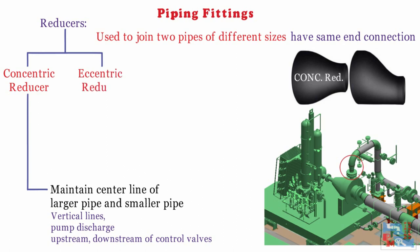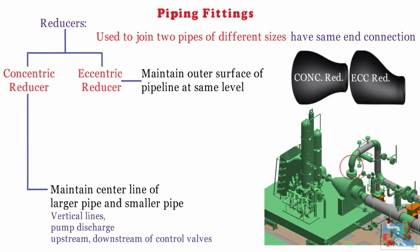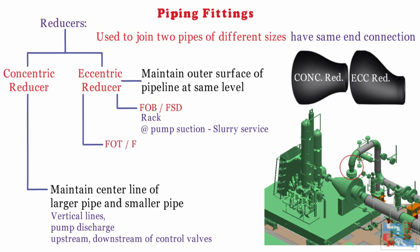Second is eccentric reducer, commonly denoted as ECC reducer in isometrics and P&IDs. It is used when we need to maintain one of the outer surfaces of the pipelines at the same level. Based on orientation, eccentric reducers are further divided as flat on bottom (FOB) or flat side down (FSD), used to maintain the same bottom of pipe elevation in pipe racks and for pumps handling slurry services; and flat on top (FOT) or flat side up (FSU), used to maintain top of pipe at the same elevation and at the suction of pumps to avoid cavitation, and upstream and downstream of control valves.